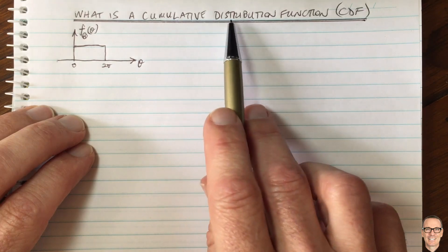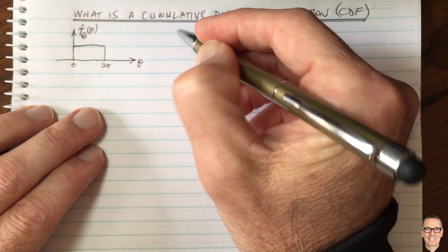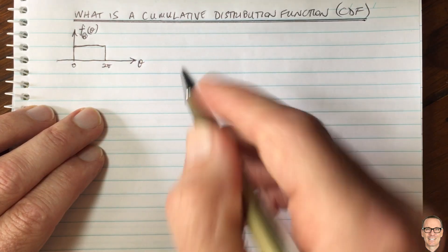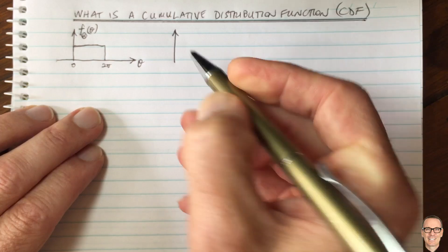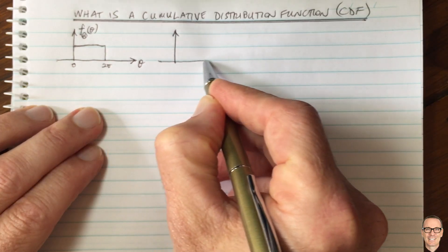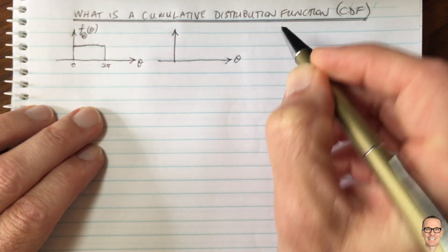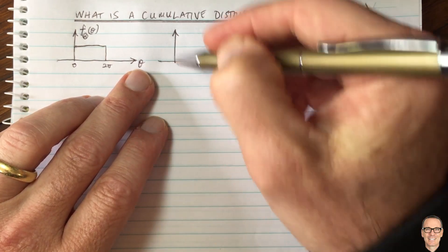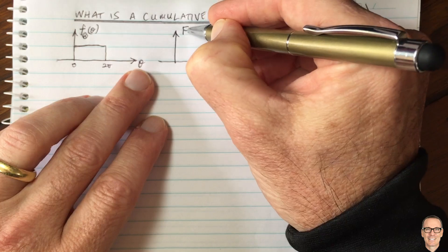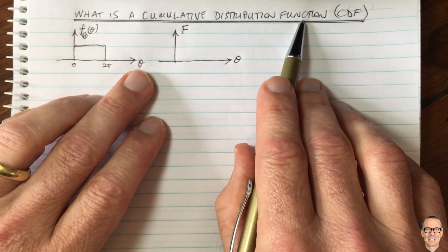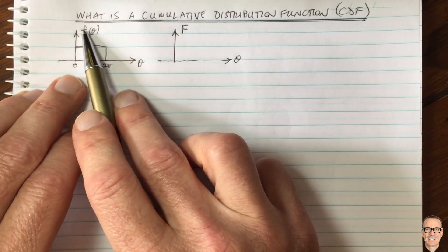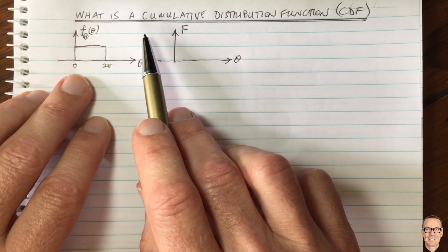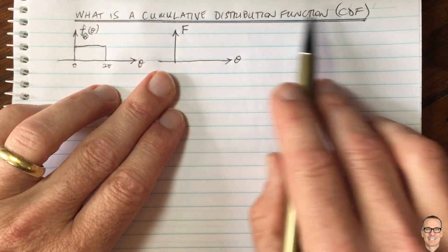So what is the cumulative distribution function? Well, as the name implies, it accumulates the probabilities. It's still a function of theta — the possible values the random variable can take. We use a capital F for the CDF. This is the traditional notation: a small f (or sometimes small p) for the probability density function, the PDF, and a capital F for the CDF.